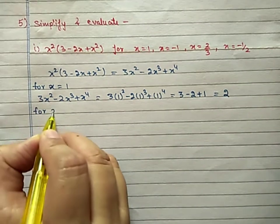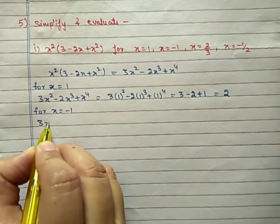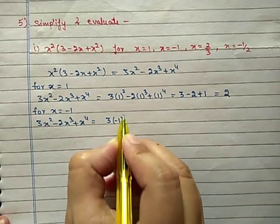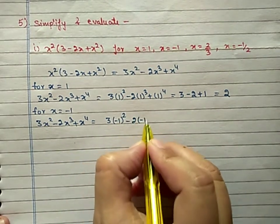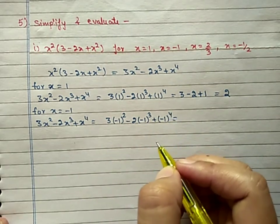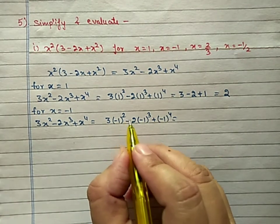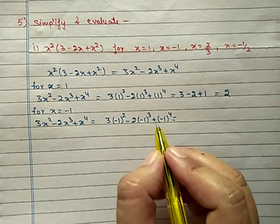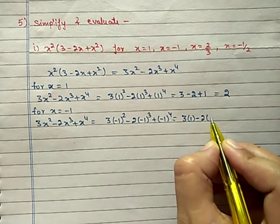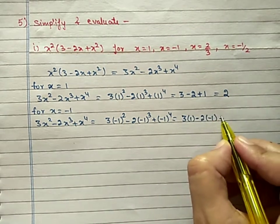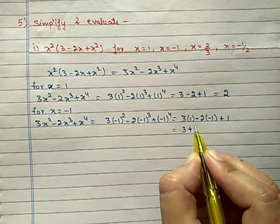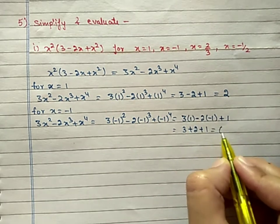Now substitute x = −1 into 3x² − 2x³ + x⁴: 3(−1)² − 2(−1)³ + (−1)⁴. Remember: if the power is even, the answer is +1; if the power is odd, the answer is −1. So: 3(1) − 2(−1) + (1) = 3 + 2 + 1 = 6.